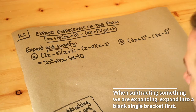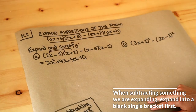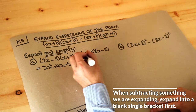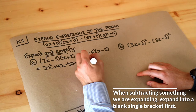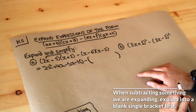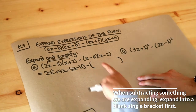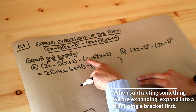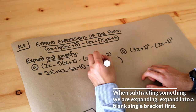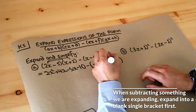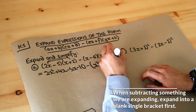Now as per my tip: we're subtracting something we're expanding, so we expand it into a blank single bracket first. I'm going to put minus and then expand these double brackets into a blank single bracket. Expanding: x times x is x squared, x times minus 2 is minus 2x, minus 6 times x is minus 6x, and negative 6 times negative 2 is positive 12.